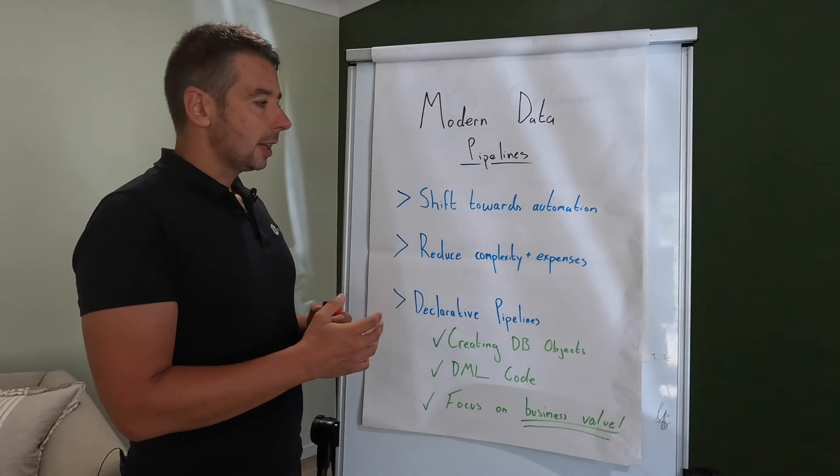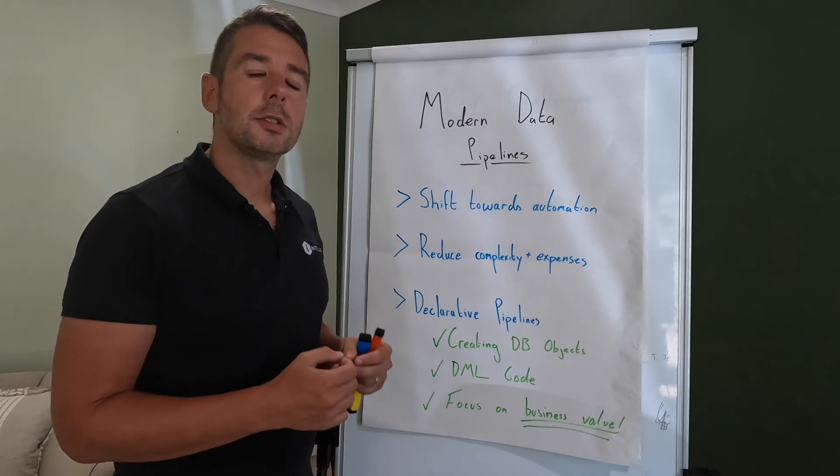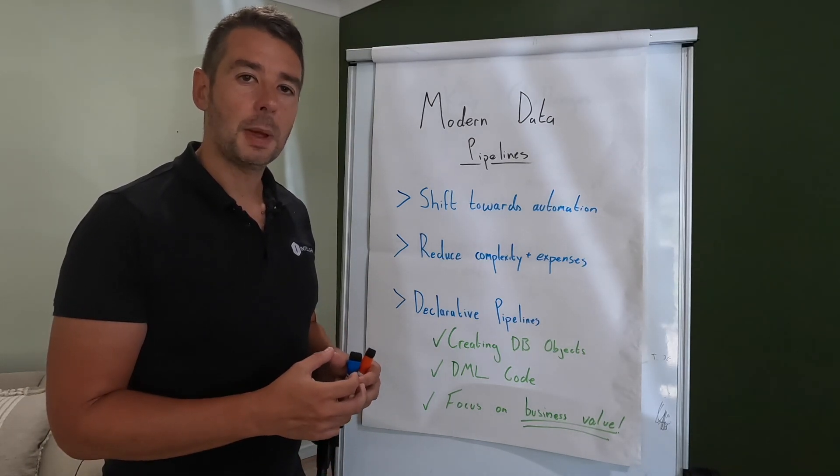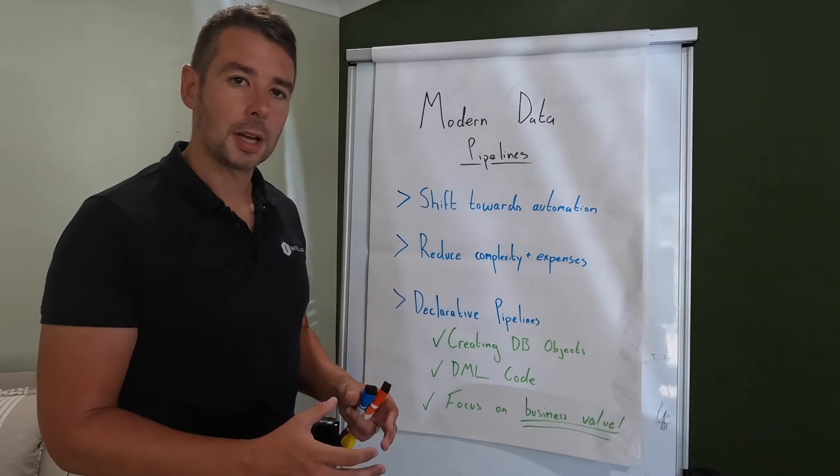So with modern data pipelines now there's a general shift towards automation. How can we reduce the maintenance overhead and the expense and cost of creating, developing and maintaining data pipelines?